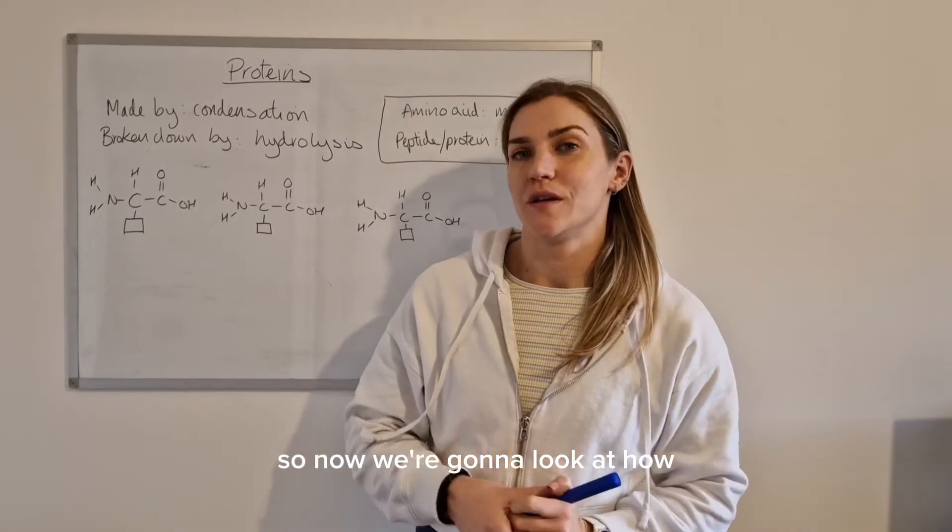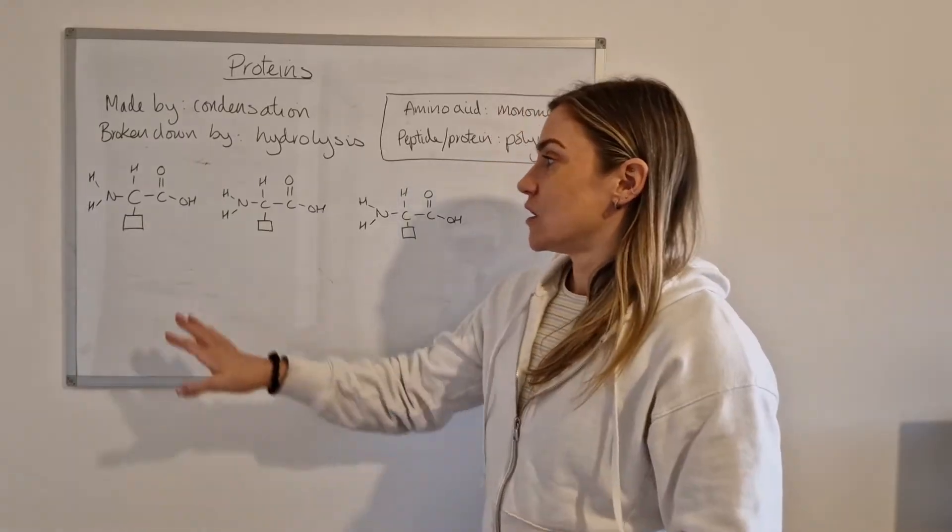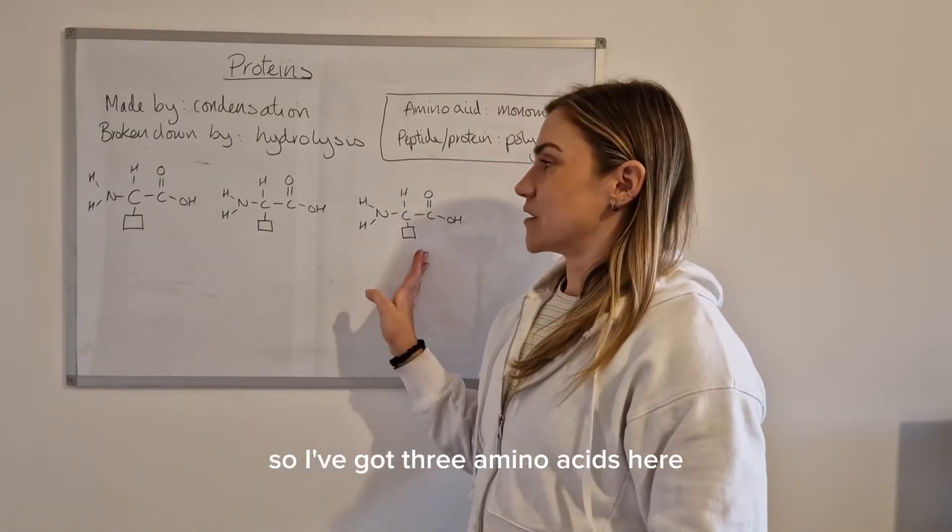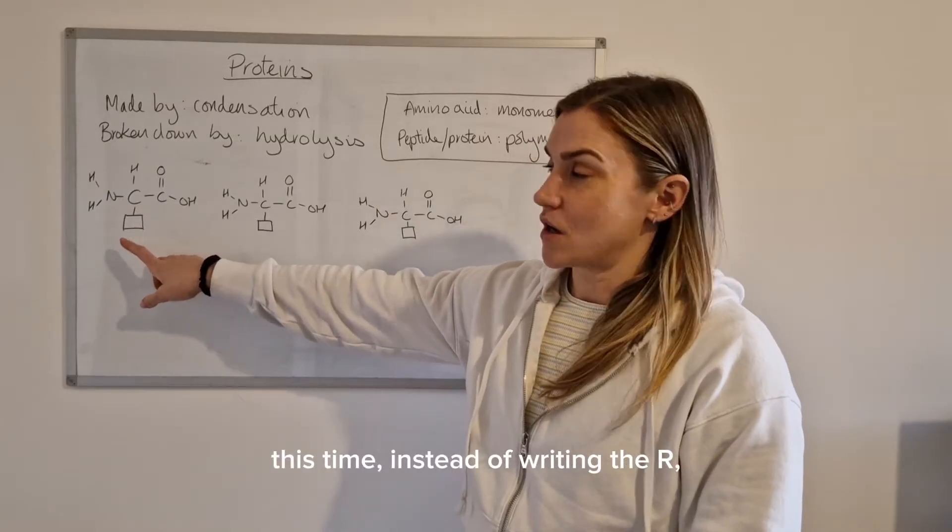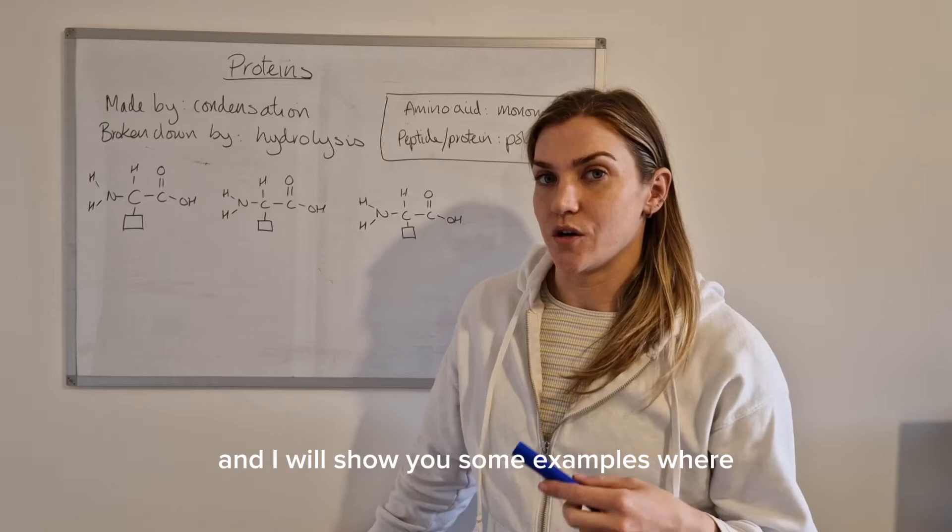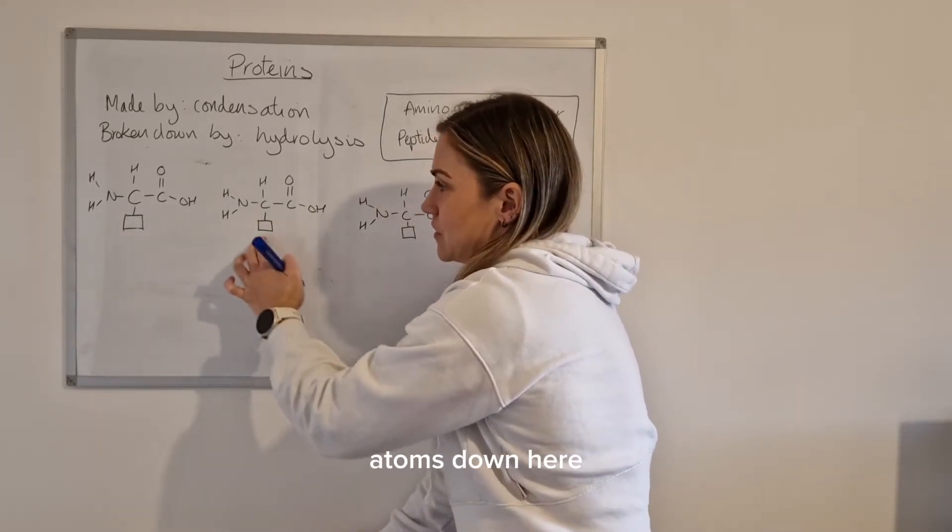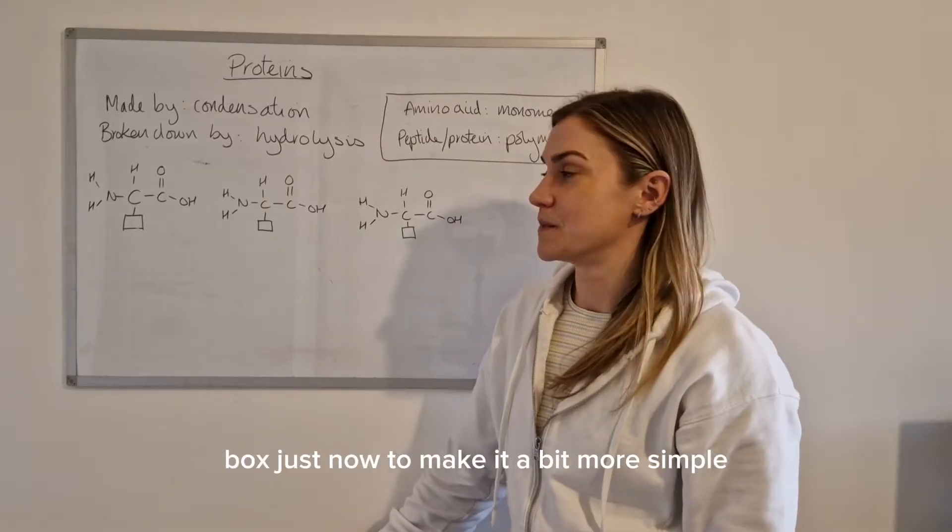Okay so now we're going to look at how the amino acids actually join together to make the peptide or protein chain. So I've got three amino acids here and the R group this time instead of writing the R I've just drawn them as wee blocks. I will show you some examples where there are actually atoms down here but we'll just stick for the blocks just now to make it a bit more simple.